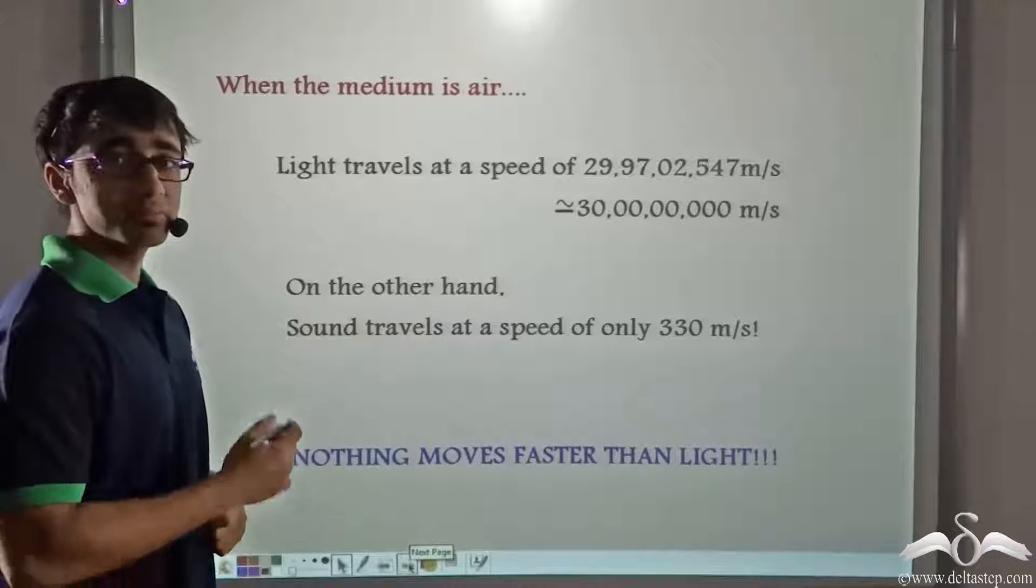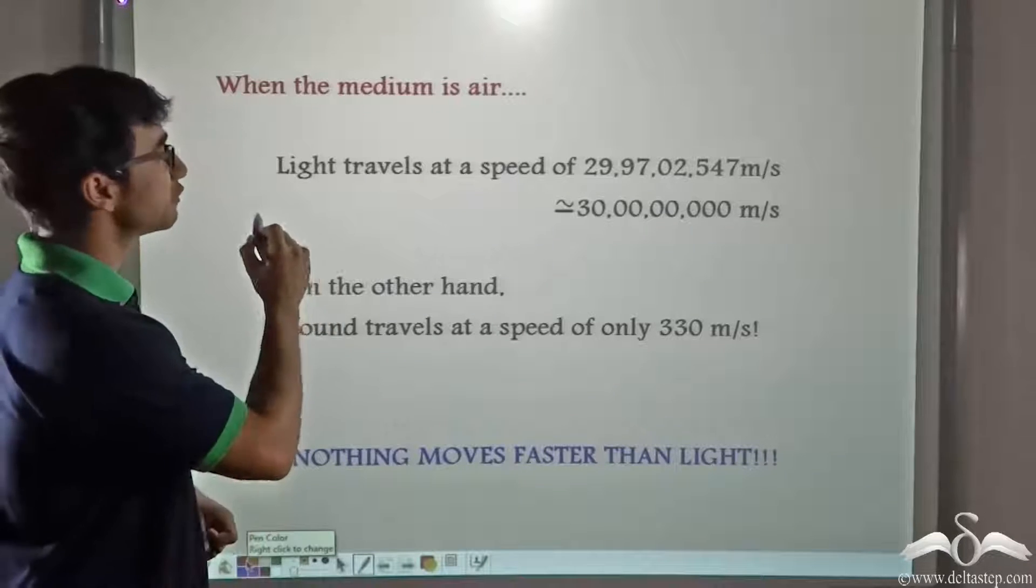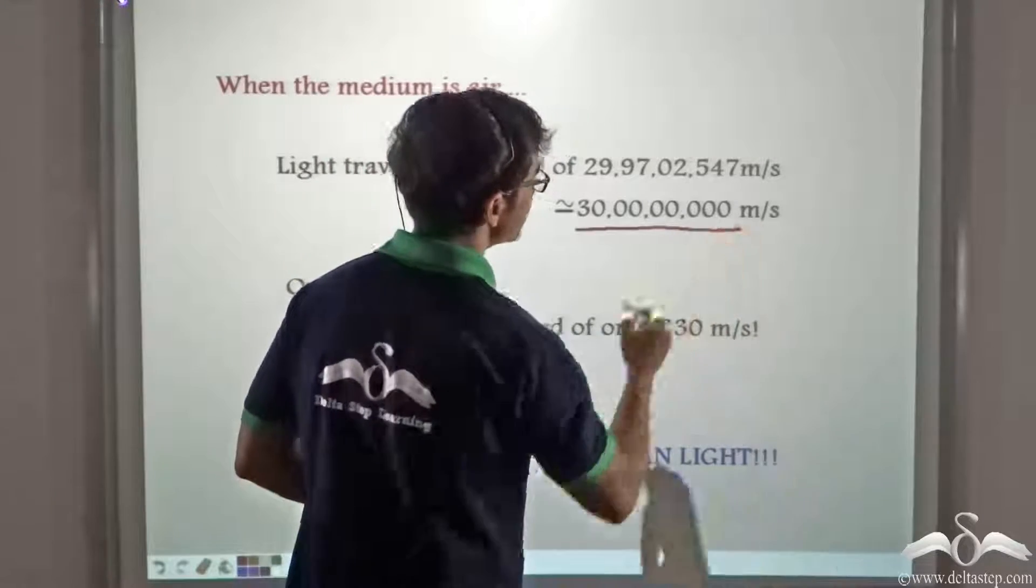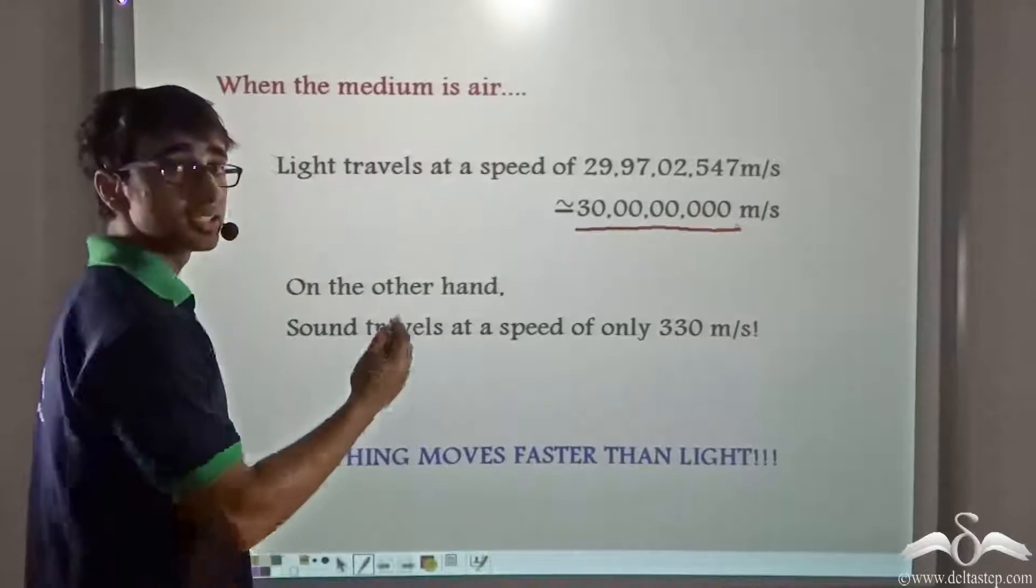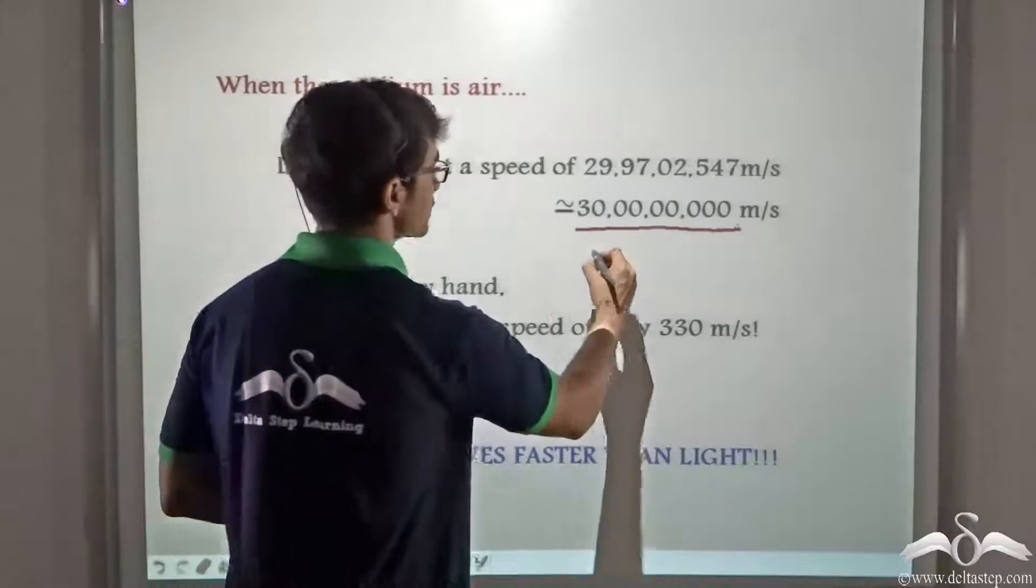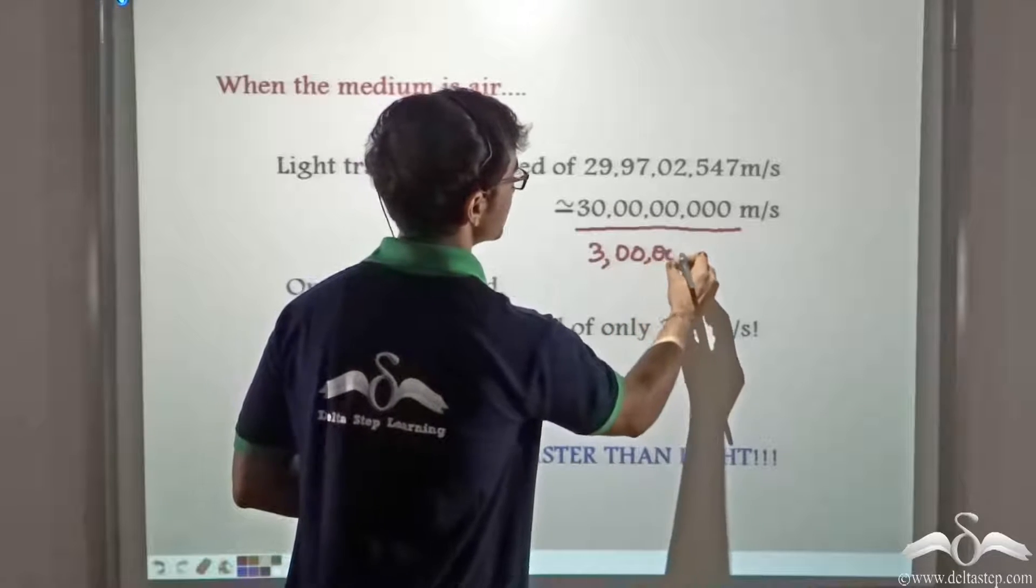So why do you see and hear differently? Well, when the medium is air, the speed of light is 3 into 10 to the power 8 meters per second or 30 crore meters per second. We can also say the speed of light is 3 lakh kilometers per second.